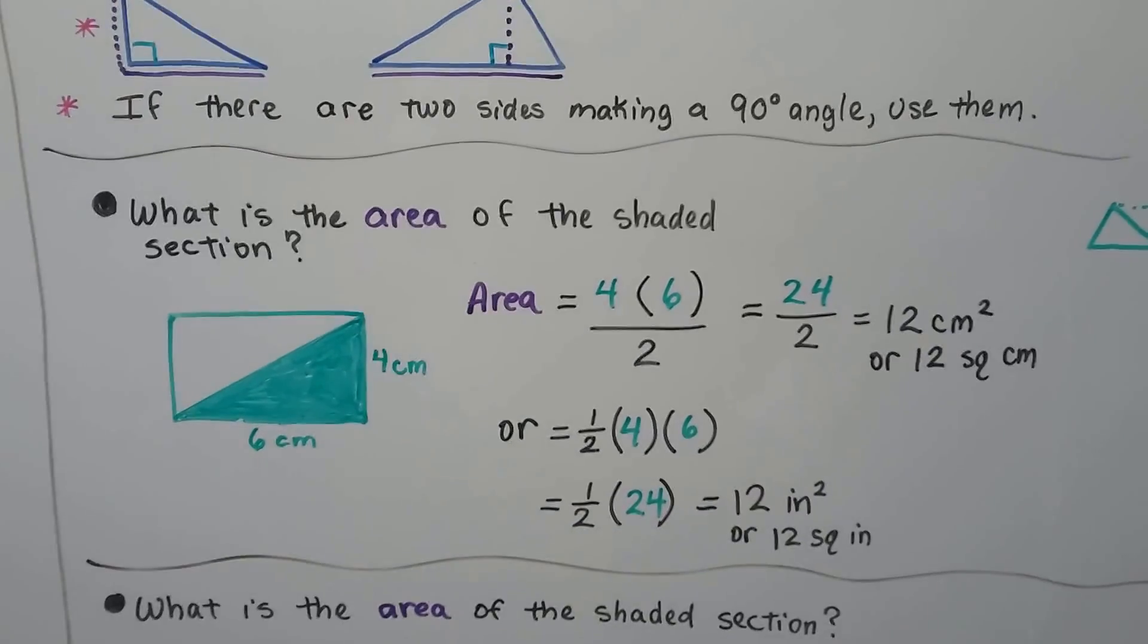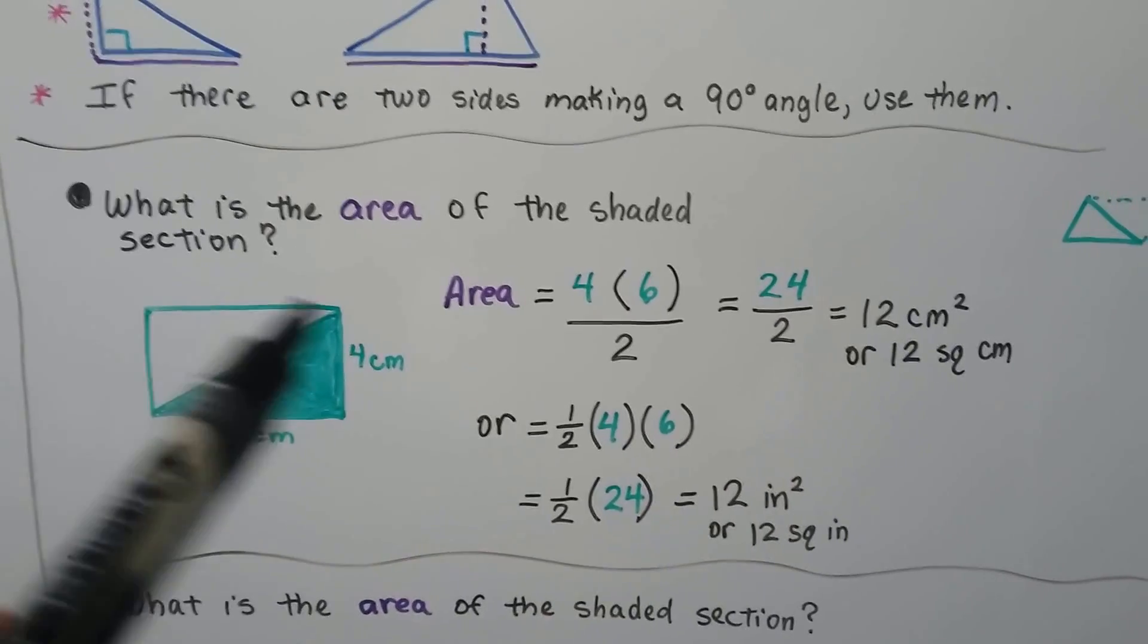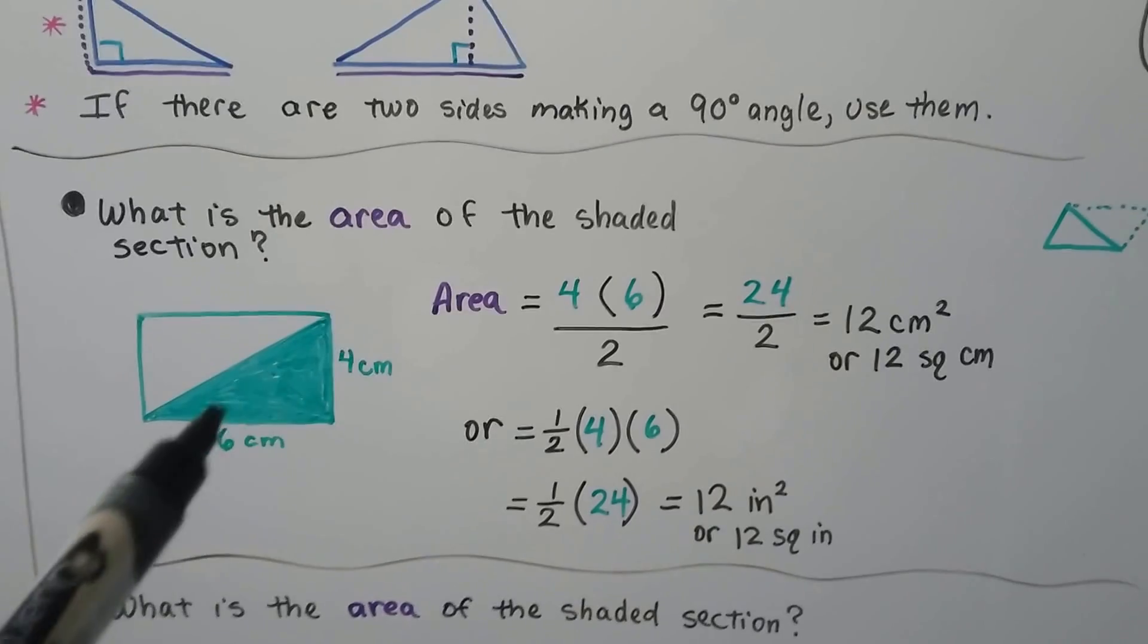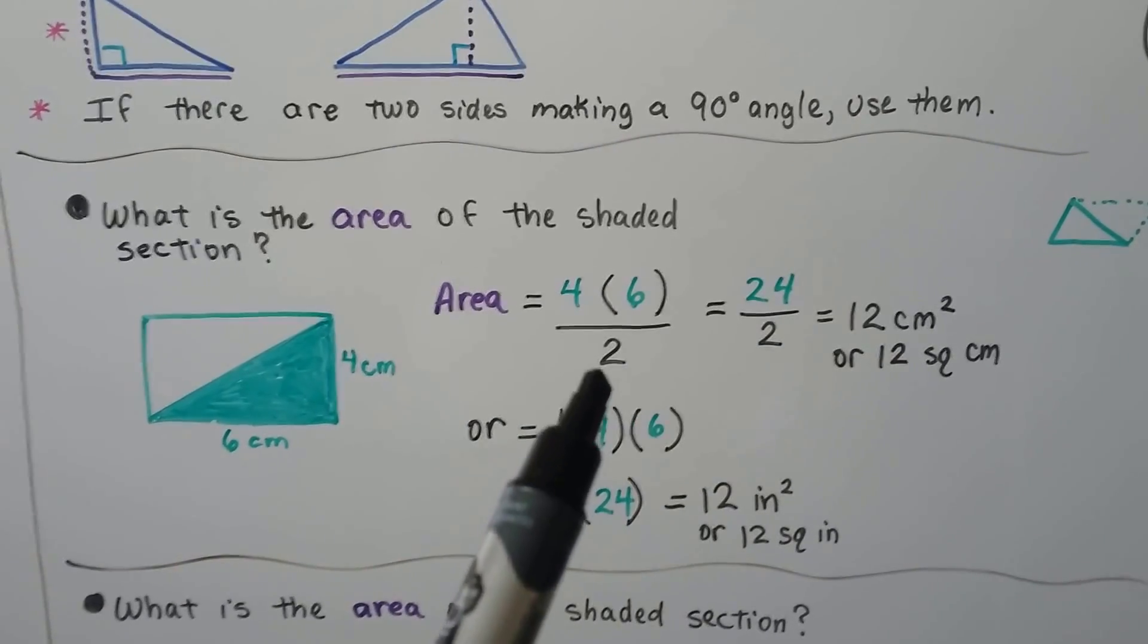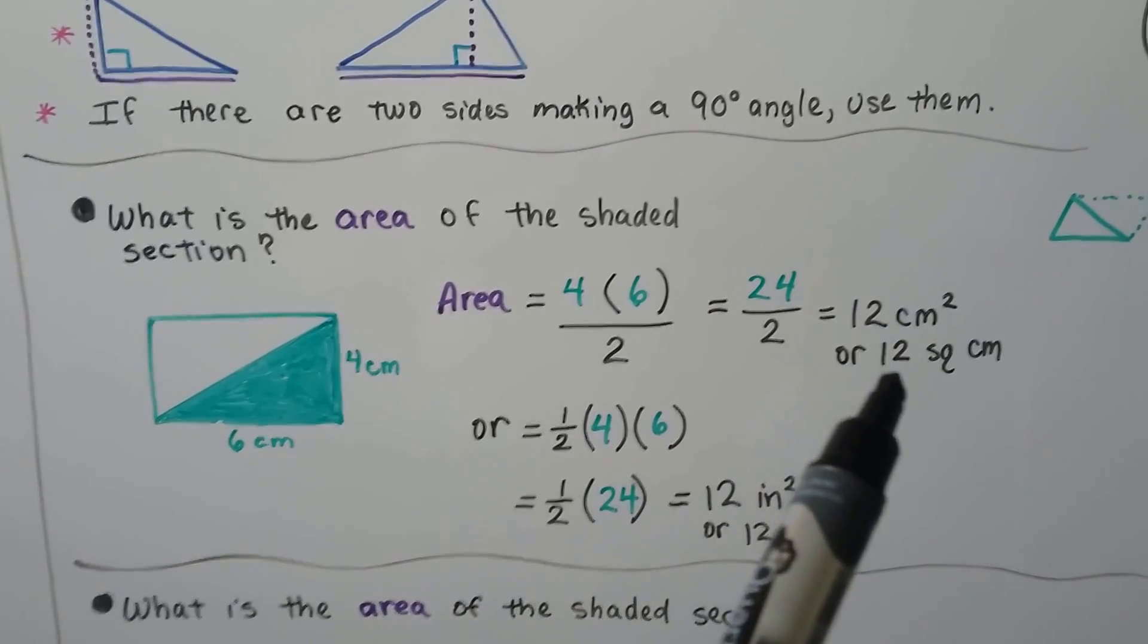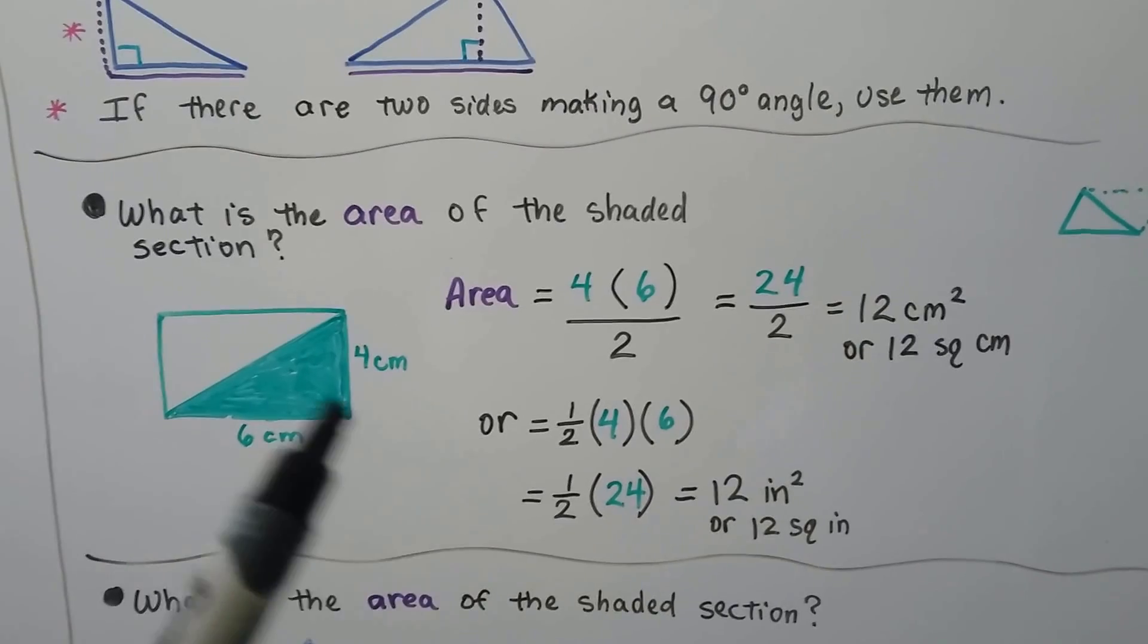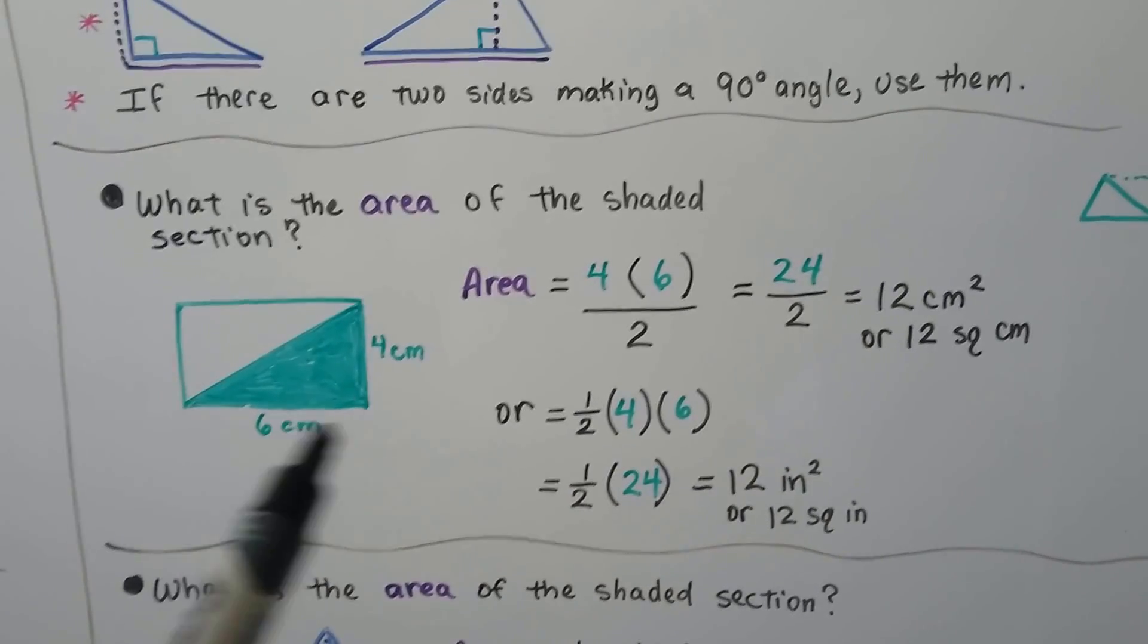What is the area of this shaded section? Well, the area of the whole thing would be 4 times 6, but we're only doing the shaded section. So we could do 4 times 6 is 24 and divide it by 2 to get 12 centimeters squared or 12 square centimeters. Or we could use the triangle formula and do half times 4 times 6.